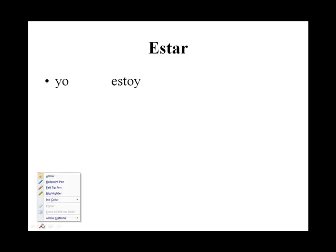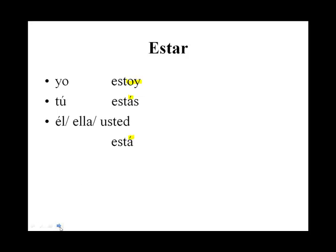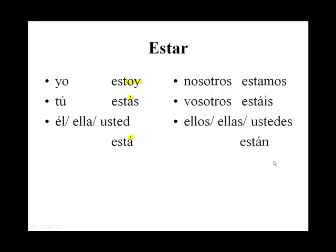Yo estoy. We can see right off the bat that estoy is conjugated different than a regular verb. Tú estás — we see estás has an accent over it. Él, ella, usted está. Again, it would be regular, but for that little accent. Nosotros estamos. Vosotros estáis. Ellos, ustedes, ellas están — again, would be regular, but for that little accent.